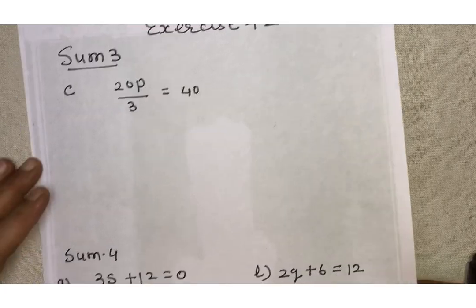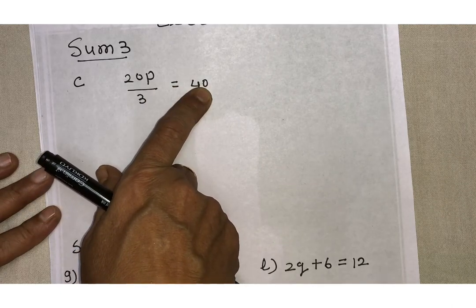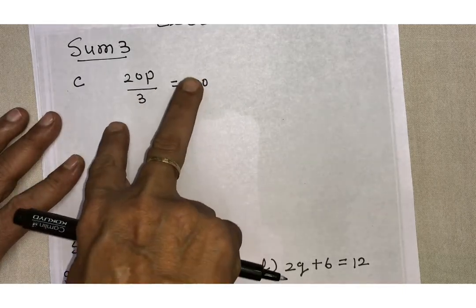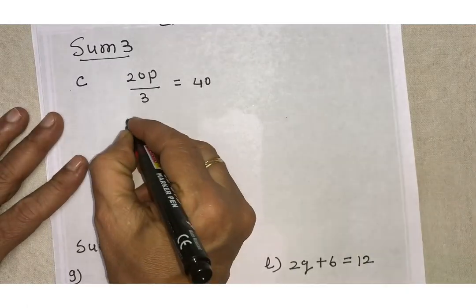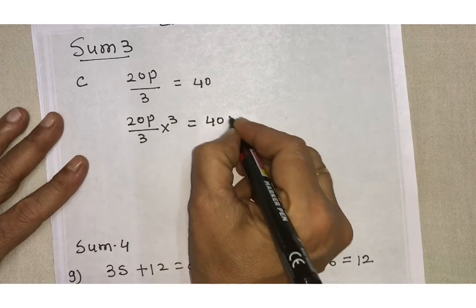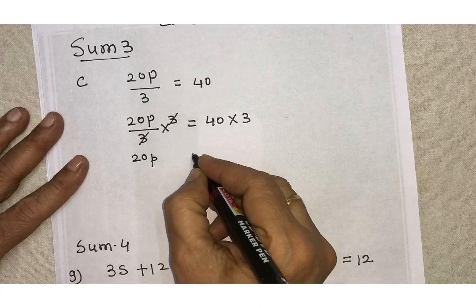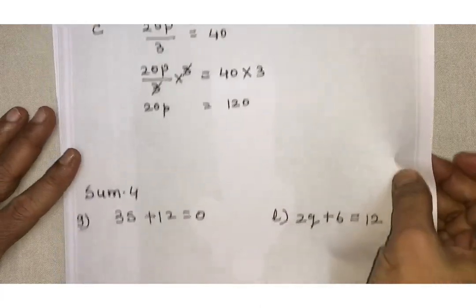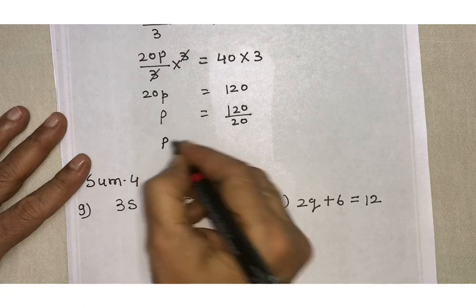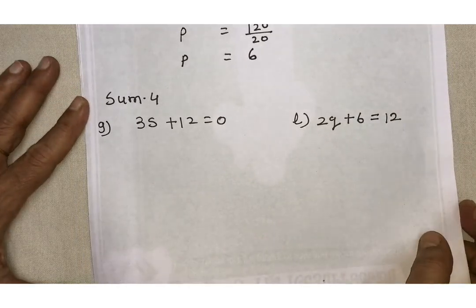Sum number 3: 20P upon 3 equals 40. First, we multiply both sides by 3. So 20P upon 3 multiplied by 3 equals 40 multiplied by 3. The 3s cancel, giving 20P equals 120. Then we divide by 20, so P equals 120 upon 20, which gives P equals 6.